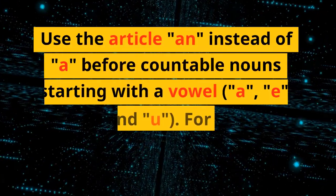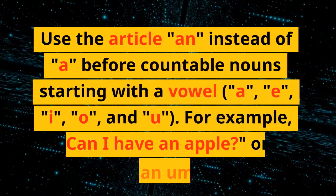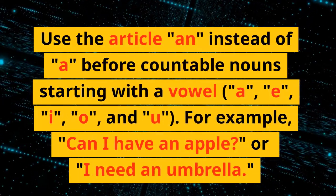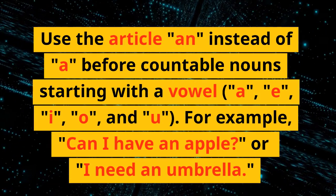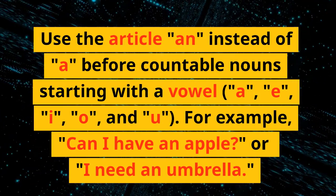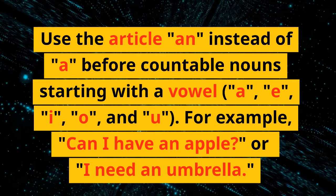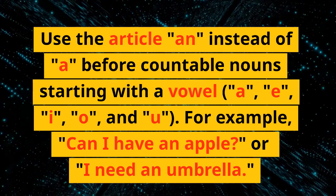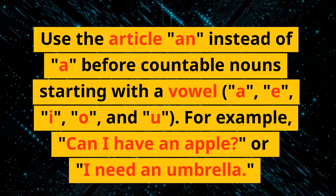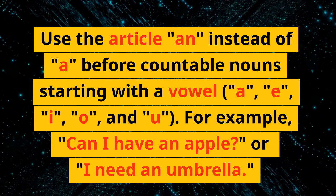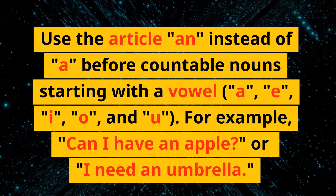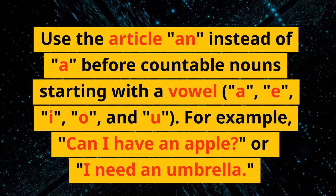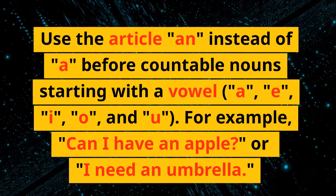Use the article 'an' instead of 'a' before countable nouns starting with a vowel: a, e, i, o, and u. For example, 'Can I have an apple?' or 'I need an umbrella.'